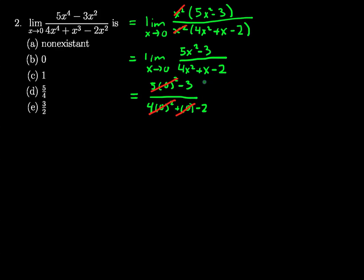So we're left with a negative three over negative two. And by canceling out negatives, negative divided by negative, we actually get a positive 3 halves, 1.5 or 3 halves, meaning our answer is choice E.